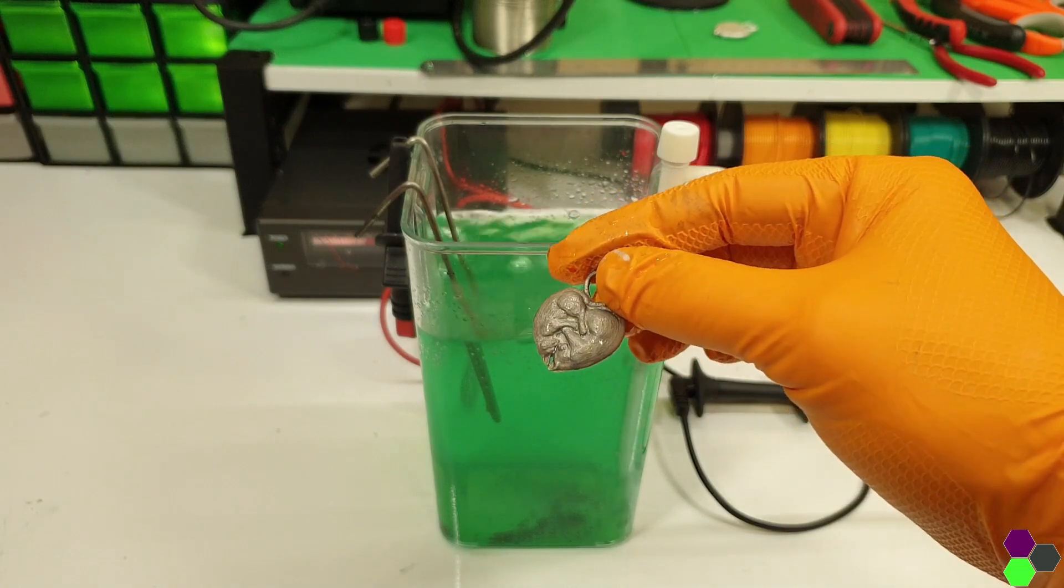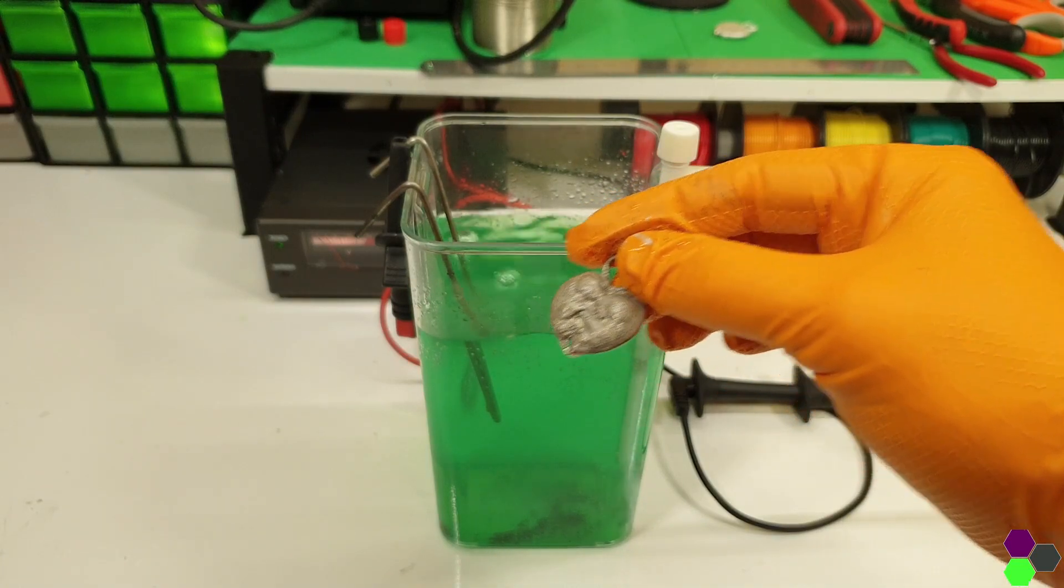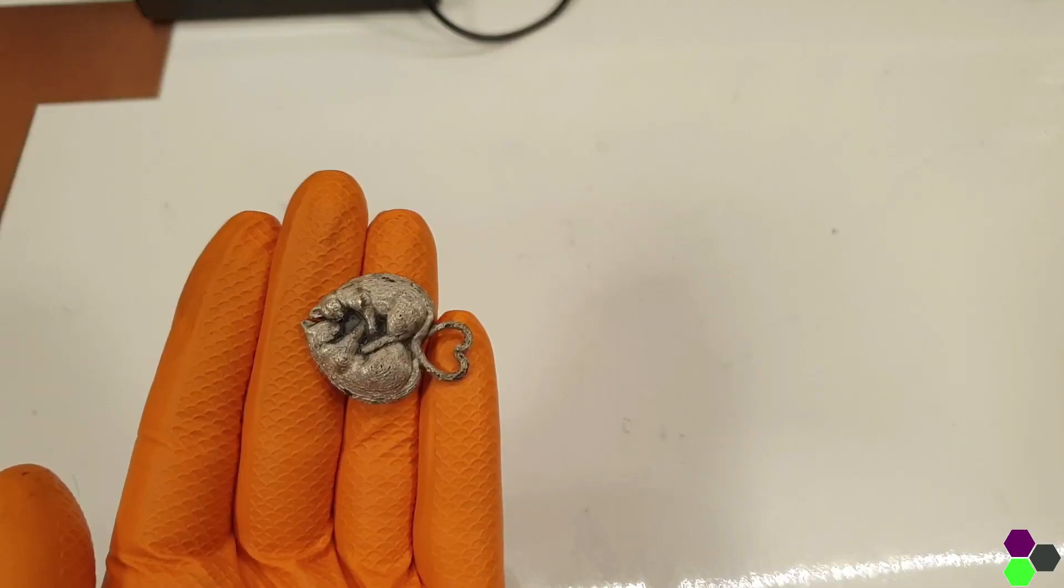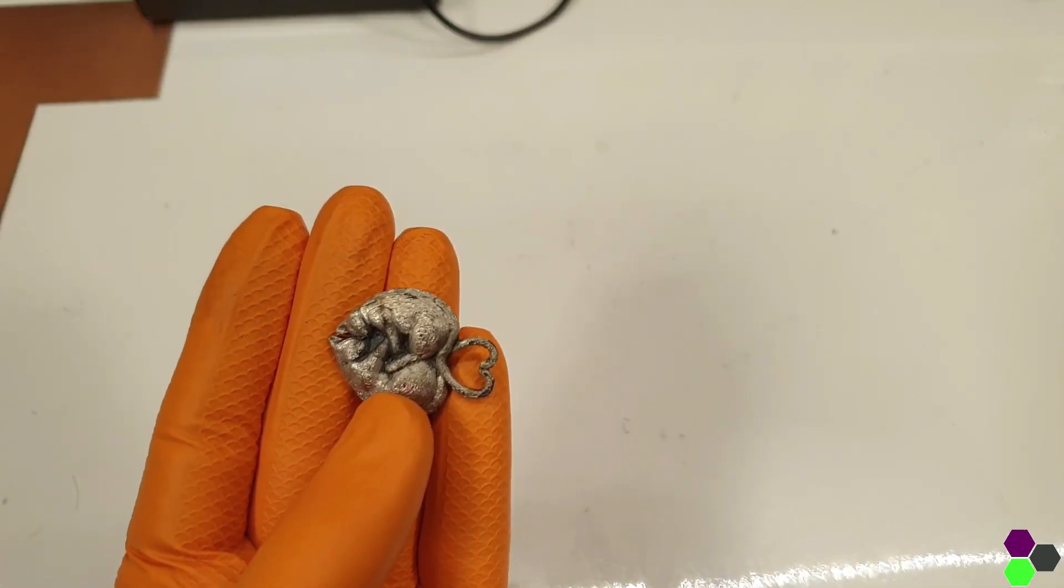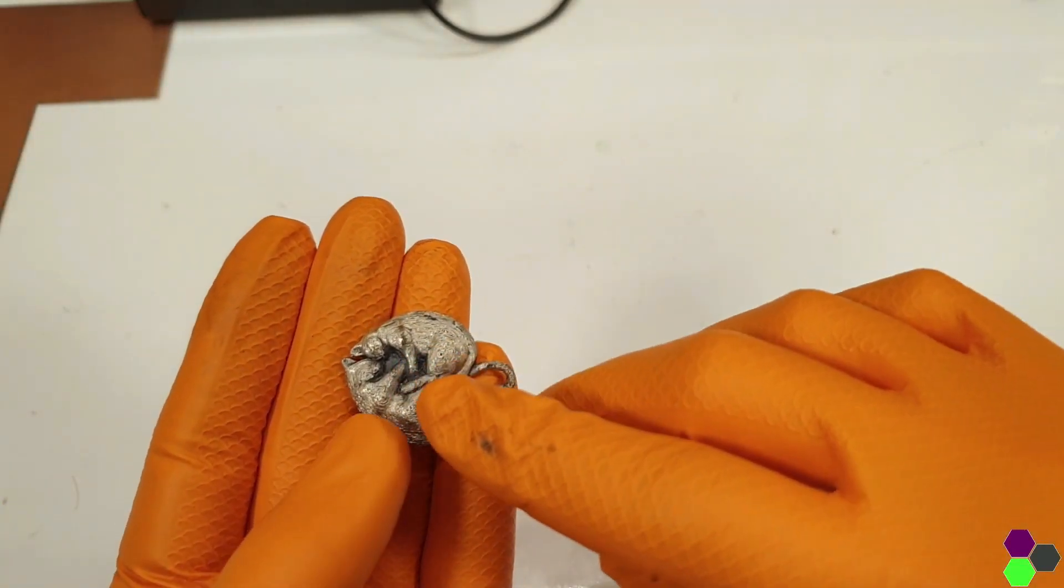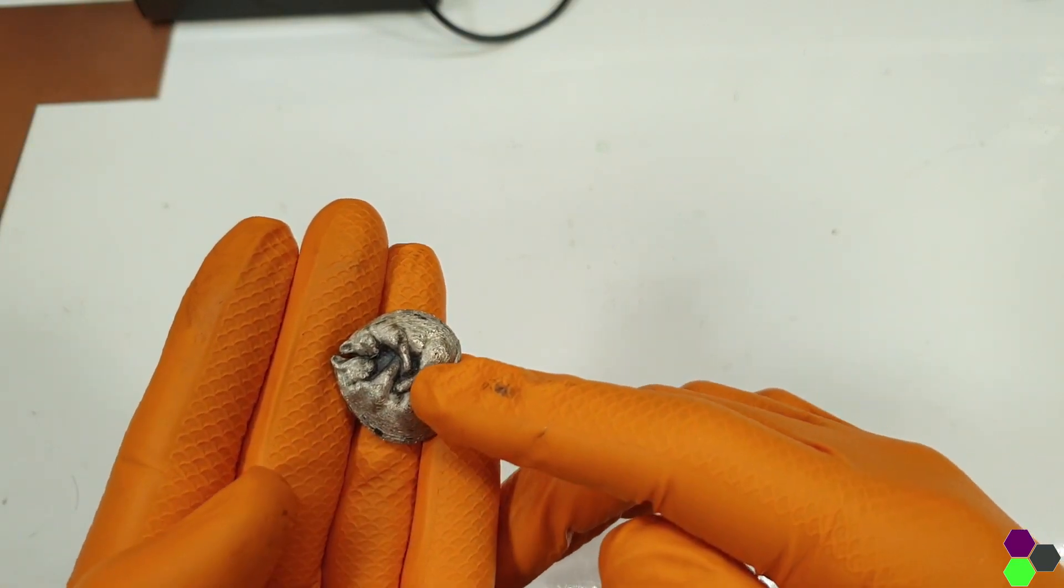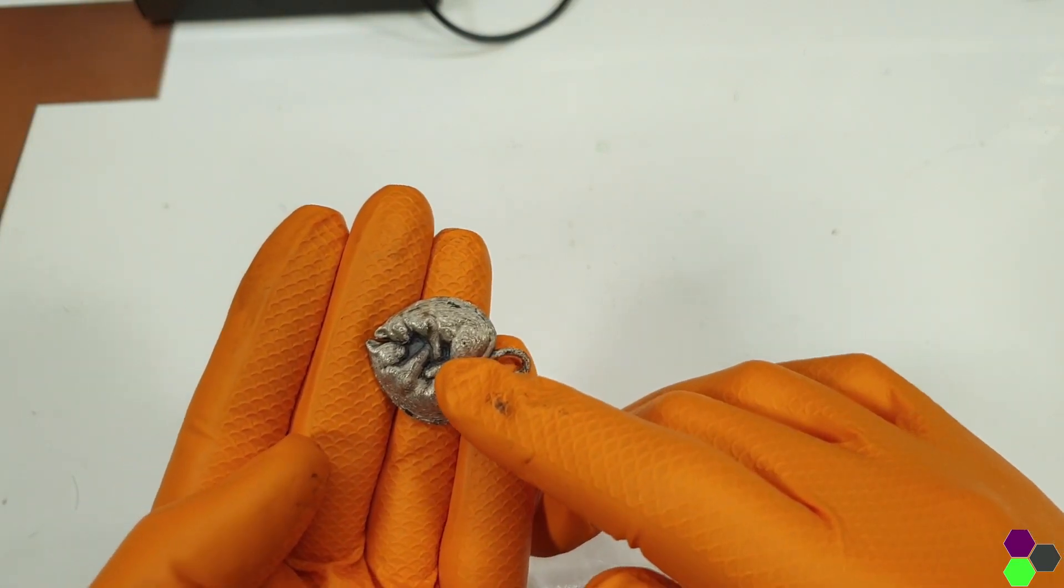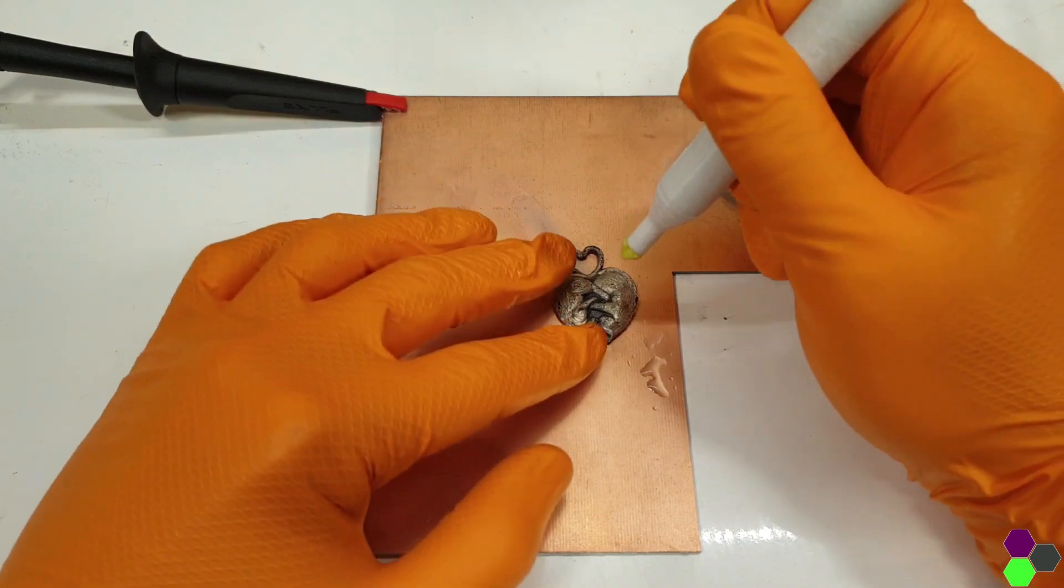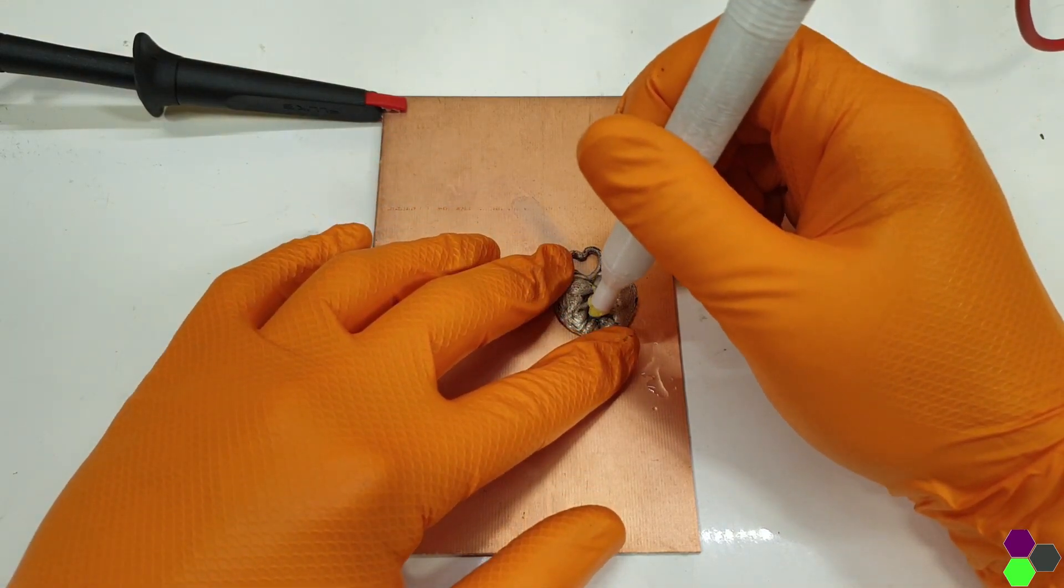Most of the ions flowing from the anode to the cathode will take the path of least resistance. Which means that in a lot of cases, pockets in your objects are not plate well or even at all, no matter how long you leave them in the plating bath. You can see this exact problem on this pendant. I have two practical solutions to this problem.